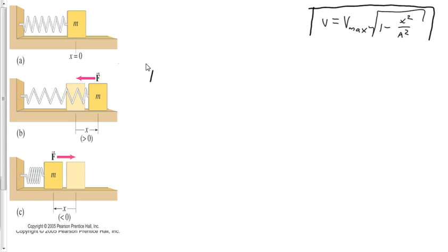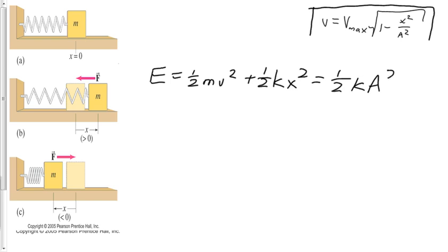Alright, so I can start off by saying that the total mechanical energy of this spring system at any moment in time is going to be equal to ½mv² plus ½kx², which in turn is going to equal ½kA². The total mechanical energy at any moment in time equals kinetic energy plus elastic potential energy. When it's displaced all the way to the right at maximum displacement — amplitude A — all of its energy is built up in potential energy, just like a pendulum at its highest height.